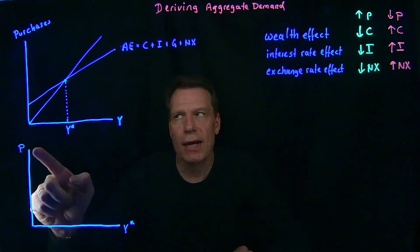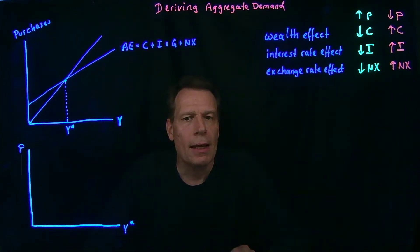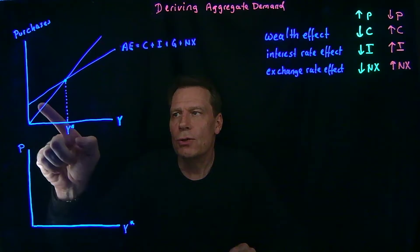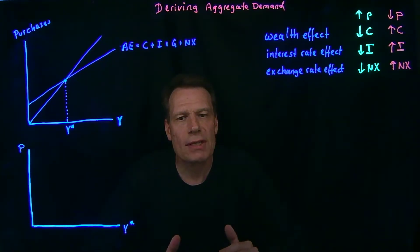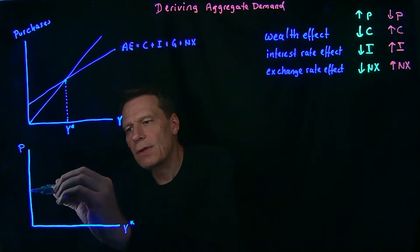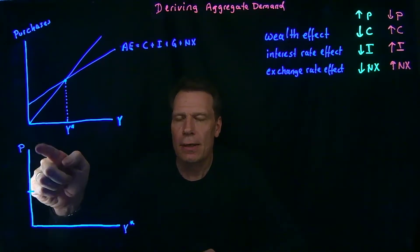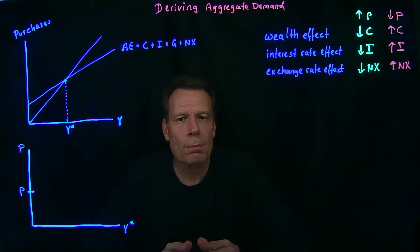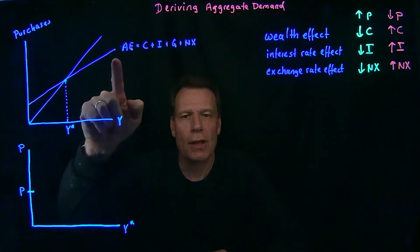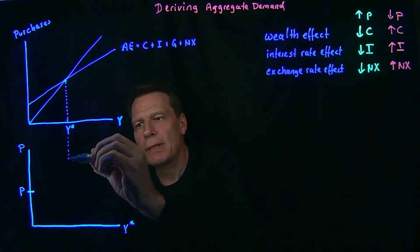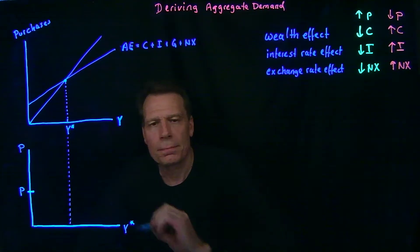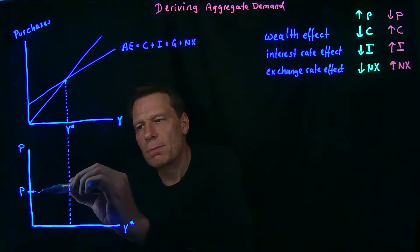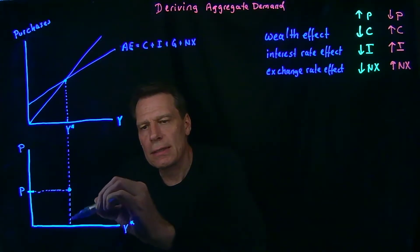So this P stands for the price level, not for purchases. Along any aggregate expenditure line, prices are held fixed. So this original aggregate expenditure line has some fixed price level, which we can indicate on our vertical axis. Let's label that as P. At that original price level, the aggregate expenditure line tells us that equilibrium GDP occurs at this level — giving us one point on our aggregate demand curve: at this price level, equilibrium GDP is this quantity.